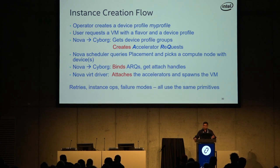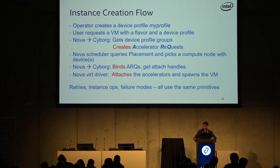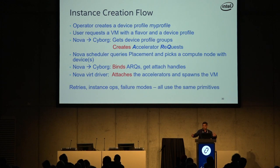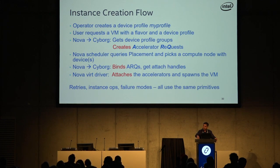Once you create an ARQ, the Nova scheduler goes through the usual process of querying Placement and getting all the allocation candidates, which now include the devices because they're nested resource providers. Placement returns them in the resource provider tree. Now that you've got a list of allocation candidate trees, Nova scheduler picks one — and once done, you know which compute node and which specific device resource provider within it will be used.